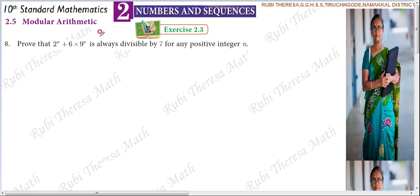Exercise 2.3, 8th sub. Prove that 2 power n plus 6 into 9 power n is always divisible by 7 for any positive integer n.